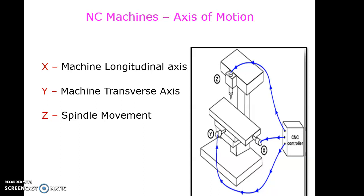Now we will discuss some basic things required about NC machines. There are three possible movements in an NC machine: X, Y, and Z. Z represents the spindle movement, so a tool can travel up and down in this direction — this is the Z movement. The longitudinal table movement is called X.